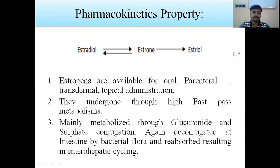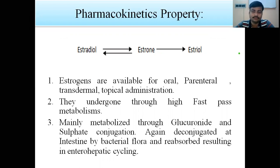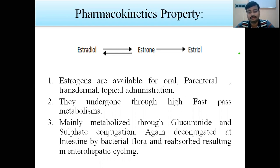Considering the pharmacokinetic properties of estrogen, it is available for oral, parenteral, transdermal, and topical administration. After application, estradiol gets converted to estrone, which may convert back to estradiol before being eliminated. Estrogen undergoes first-pass metabolism, which takes place in the liver, and is mainly metabolized through glucuronide and sulfate conjugation, then deconjugated at the intestine by bacterial flora and reabsorbed, resulting in enterohepatic cycling.